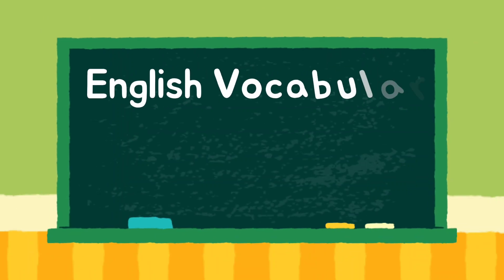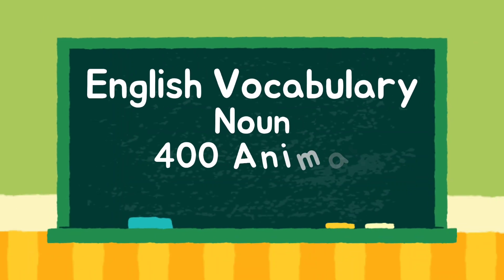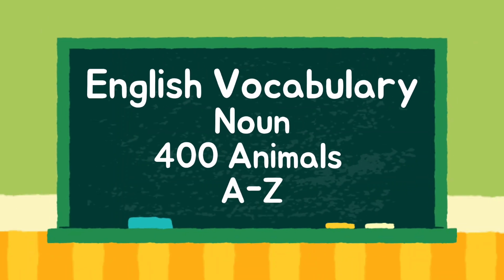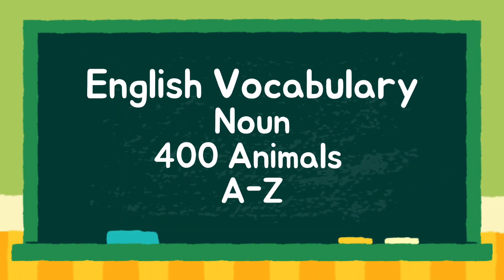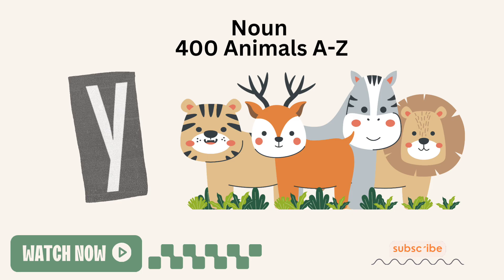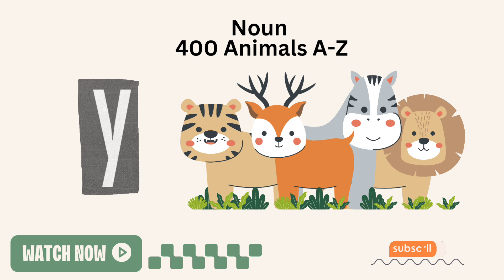English vocabulary. Noun: 400 animals A to Z. Y.